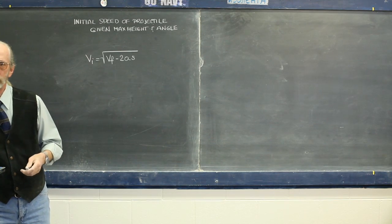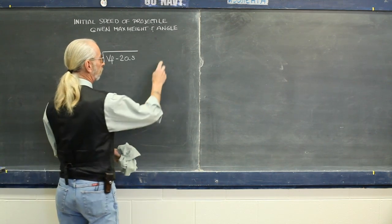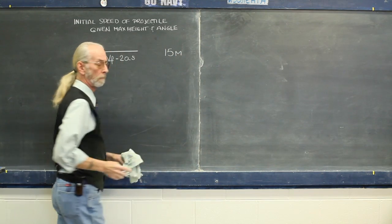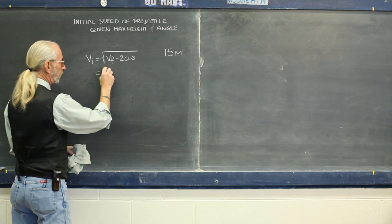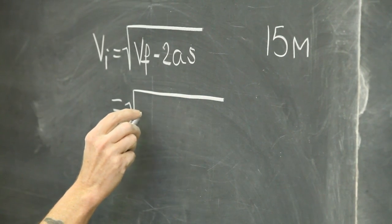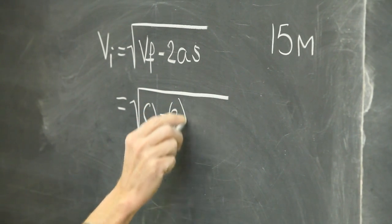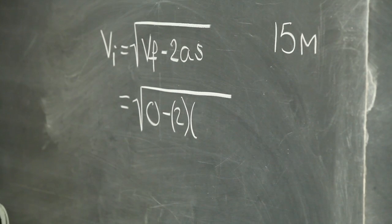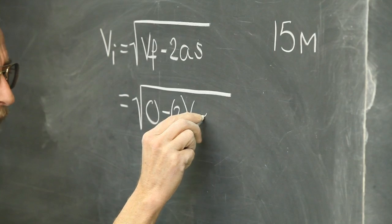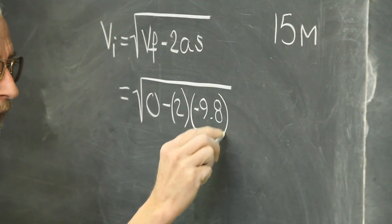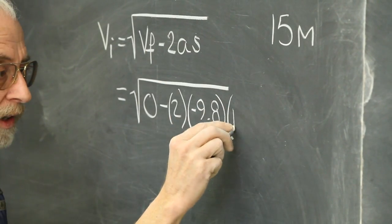Let's say that we have an object that reached a maximum height of 15 meters. So the final velocity of such an object would be zero minus two. Gravity is opposing the velocity vector, so we give gravity a negative value, 9.8 times the height, 15.